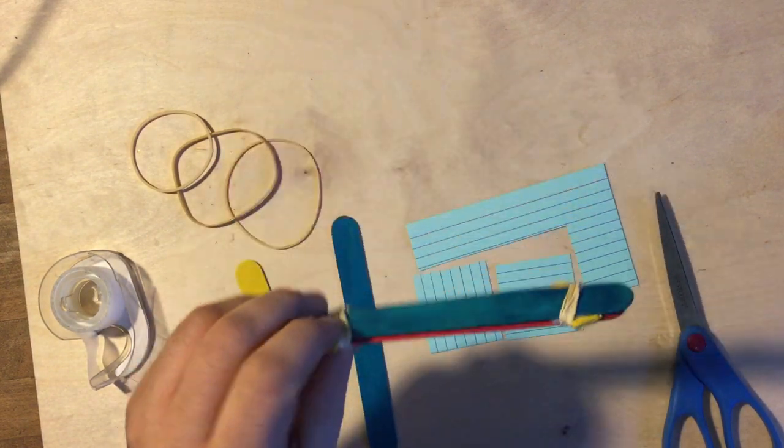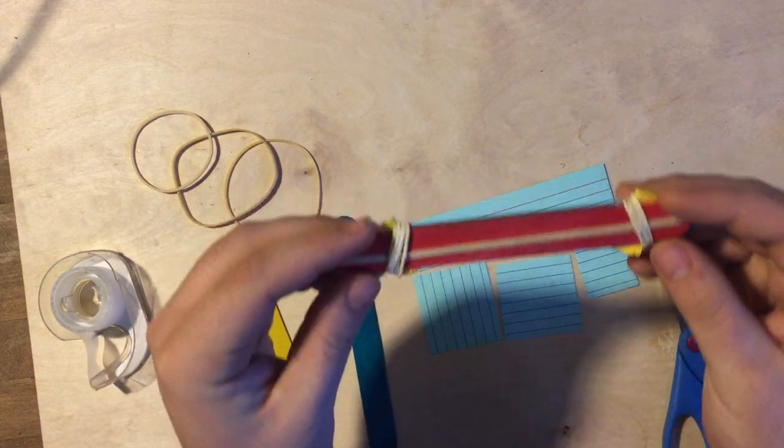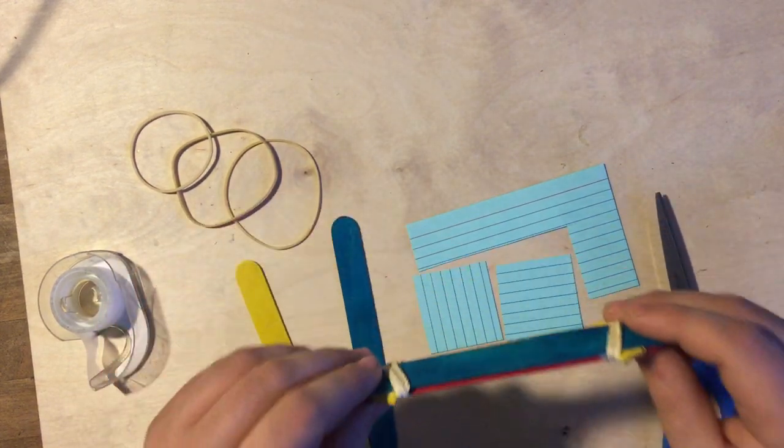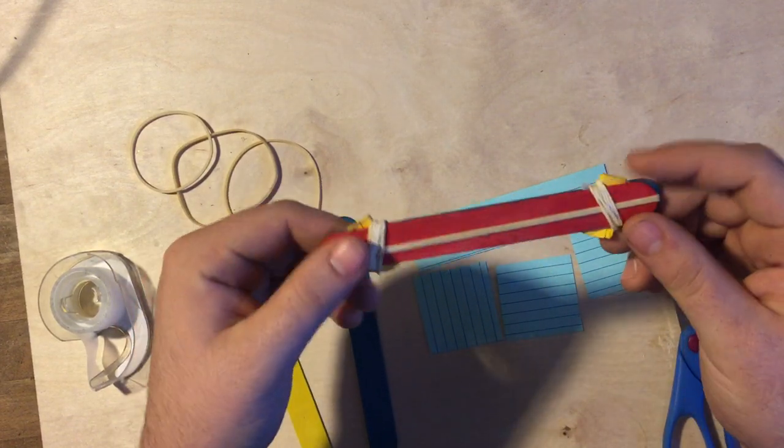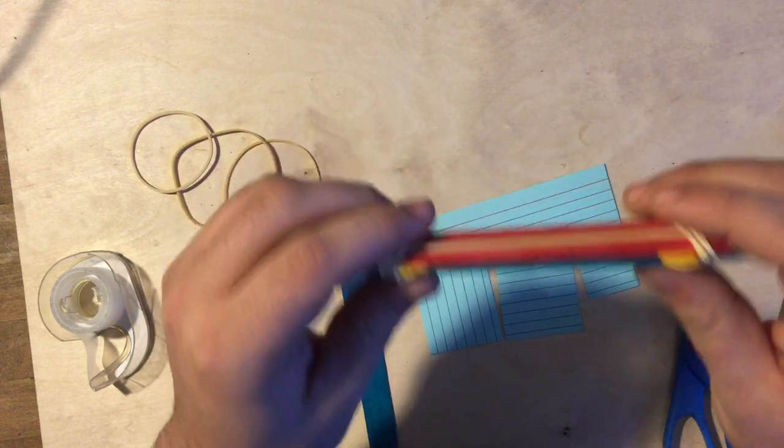In this challenge we're going to create this Popsicle Stick Harmonica. We call it a harmonica because it looks like a harmonica but it really sounds more like a kazoo or maybe a saxophone depending on how you play it. Let me just show you what that sounds like really quickly.